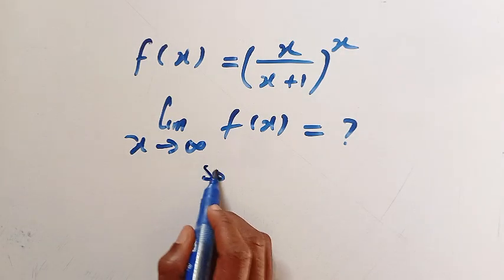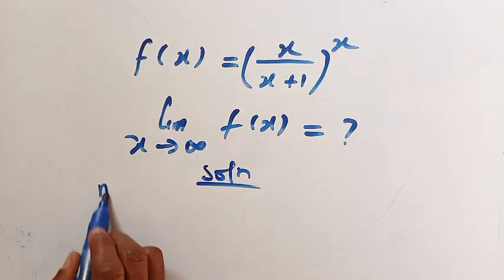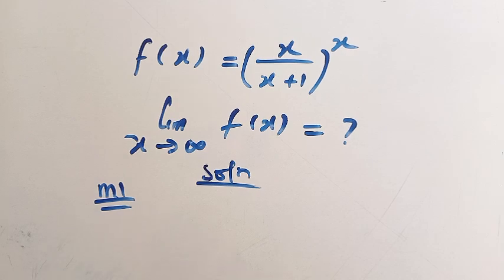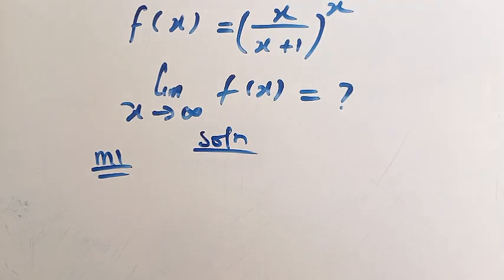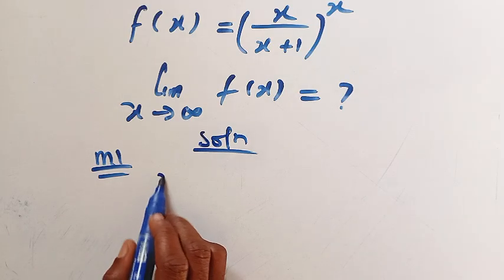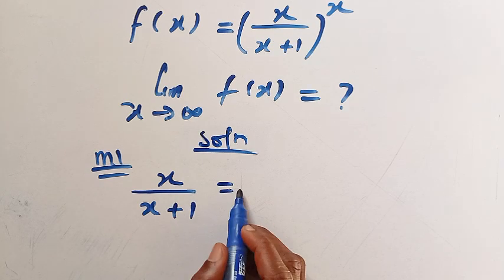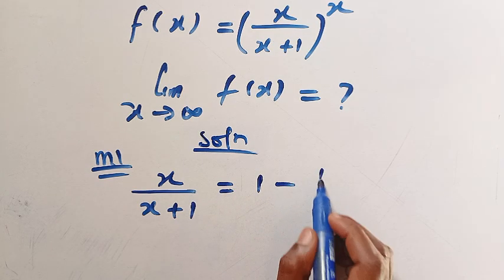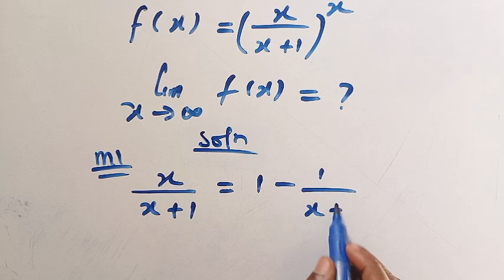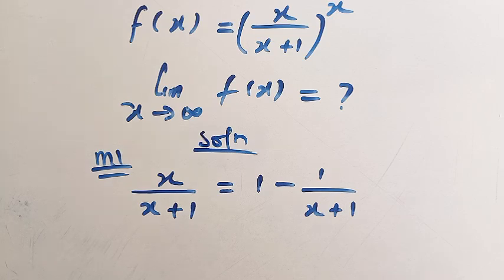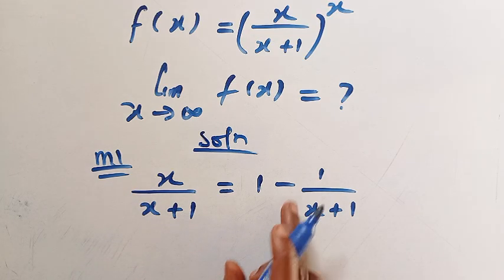Let's see the solution. Here is Method 1. From the given function, f of x equals x over x plus 1, raised to power x. It is easy to write x divided by x plus 1 as 1 minus 1 over x plus 1 — this is still the same thing as x over x plus 1.